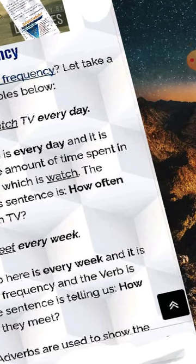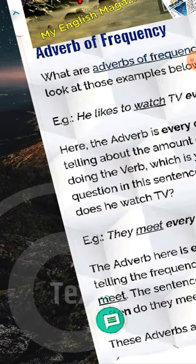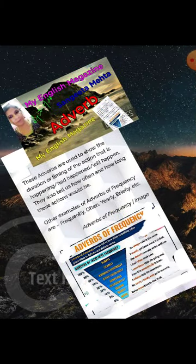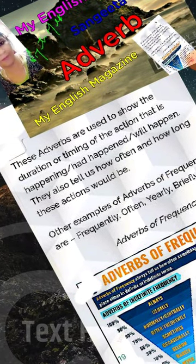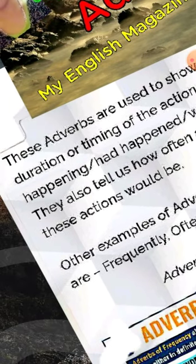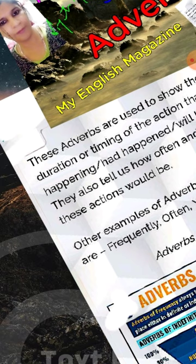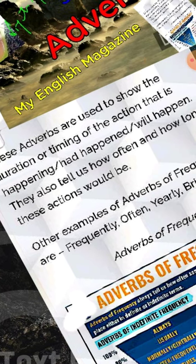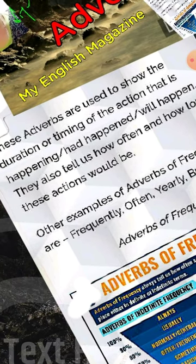And these adverbs are used to show the frequency. These adverbs are used to show the duration of timing of the action that is happening, had happened, or will happen. They also tell us how often and how long these actions would be.